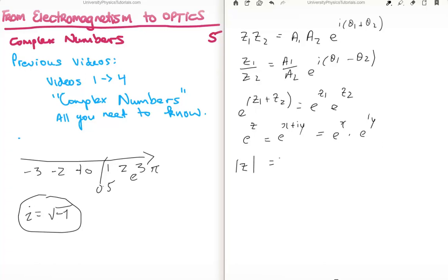Now to get the modulus or the magnitude of your complex number, what you need to do is multiply your number by its complex conjugate. So we get z, z star. And we need to take the square root of the lot. And if you look at that what we actually get is just e to the x.